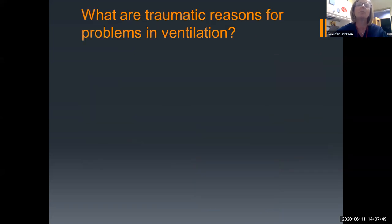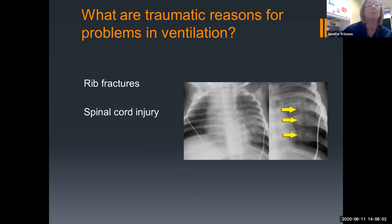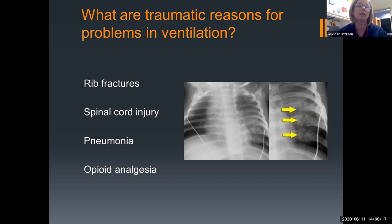For our trauma patients, they have problems with ventilation for some very specific reasons. We have kids with rib fractures — if you've ever had a fractured rib, you know how much it hurts to take a deep breath, so they're going to be taking shallow breaths. We have patients with spinal cord injuries, and if you're above C4, you're not going to be able to move your diaphragm up and down — it's going to affect your ventilation. Our patients can get pneumonia, and of course, the use of opioid analgesics can decrease our ability to take a good deep breath.